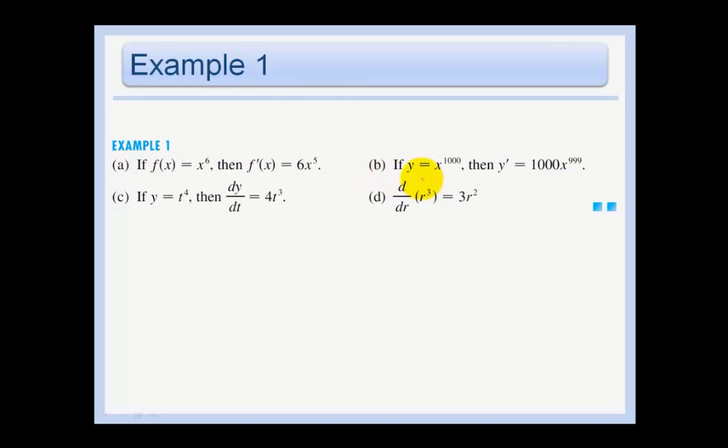In part B, if y equals x to the 1,000th, then y prime equals 1,000x to the 999. So here we're just trying to use a little bit different notation. If y equals t to the 4th, then dy/dt equals 4t to the 3rd. This is the same thing as saying y prime. This is giving us a little more information because this is saying the derivative of y with respect to t, meaning t is a variable.